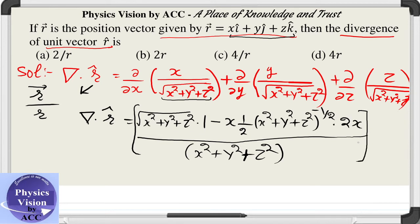Similarly, we will take the derivative with respect to y and derivative with respect to z. The difference in these terms: the structure remains the same, but in the y-term we get y, and in the z-term we get z, and correspondingly we get 2y or 2z in the numerator. The rest of the terms are the same.